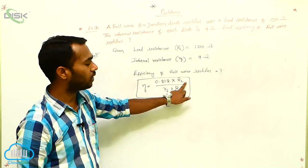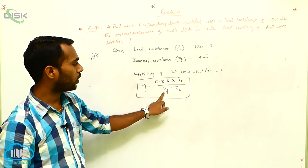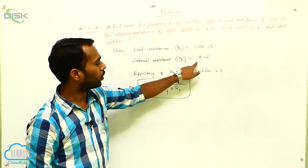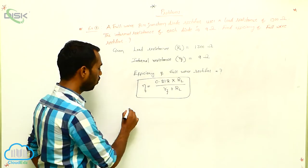Where RL is the load resistance, RF is the forward resistance. Hence, you substitute these values here, you get the final answer.